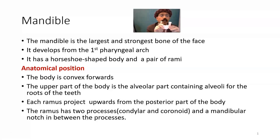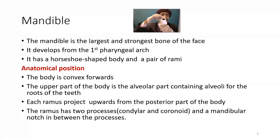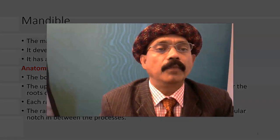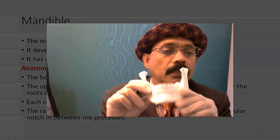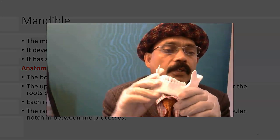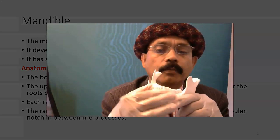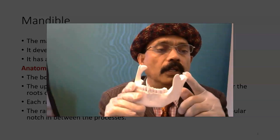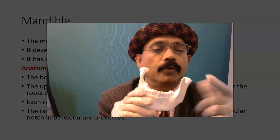Each ramus projects upward from the posterior part of the body. The ramus has two processes: the condylar process and the coronoid process. Here we have the mandible — the anterior end is convex. This is the body, this is the angular part, this is the condylar process, and this is the coronoid process.